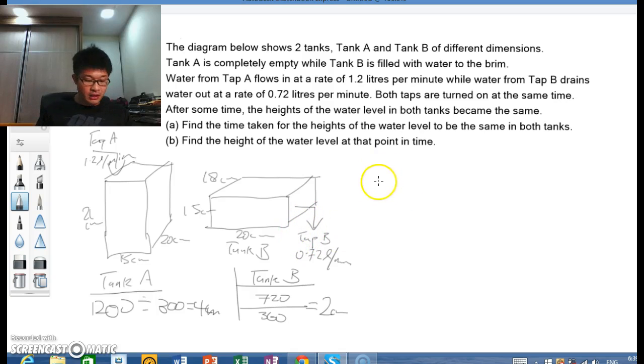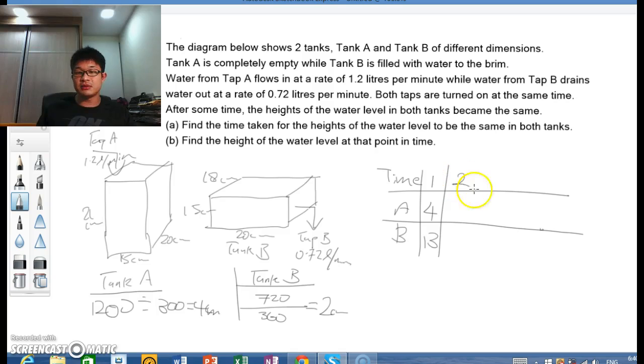So we list them out. We have the time, and we have tank A and tank B. What we're trying to do here is to find a time whereby the heights of the water levels would be common. After 1 minute, there will be an increase of 4 cm for A and a decrease of 2 cm, so the resultant will be 13 cm. It's not common, so that's not what we want. Then we look at the second minute. There's an increase of 4 cm and a further decrease of 2 cm, so it's 11 here. We're getting close.